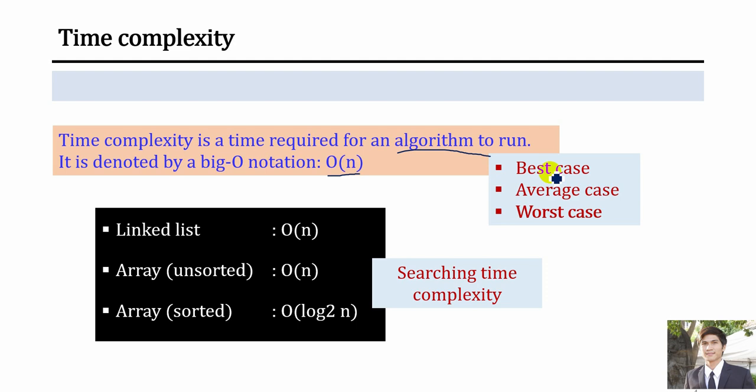For example, with data structures like linked list and array, we consider time complexity when performing search operations. In a linked list, if we have N numbers in the list, the time complexity is O(N) because we don't know where the target number will be found — it depends on how many times we traverse through the list. For an array, there are two types: sorted and unsorted. In the unsorted case, the time complexity is also O(N), while for a sorted array it is O(log₂N).